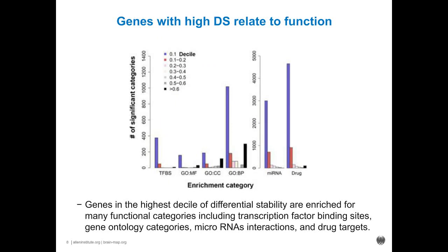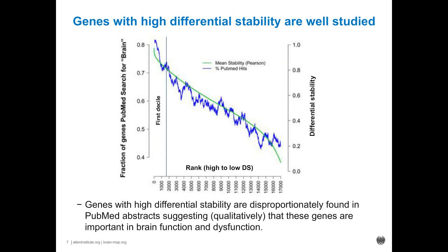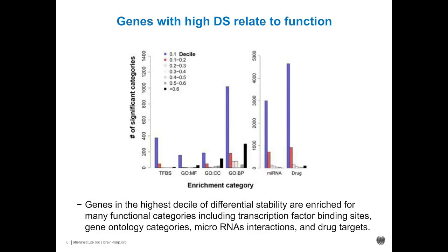To get at this more quantitatively, we looked at the top 10 percent of genes — the top decile with the highest differential stability — and similarly for the 10th to 20th percentile, 20th to 30th percentile, and so on. We looked for enrichment of each decile against functional categories: transcription factor binding sites, gene ontology terms, genes associated with microRNAs, or drug targets. The top decile — the 10 percent of genes with the most consistent expression between brains — are by far the most enriched for all of these different categories.